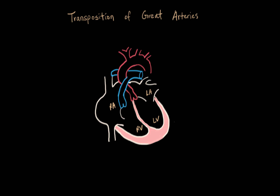So in transposition, these two vessels are plugged into the opposite place where they're supposed to be. The pulmonary artery, leading to the lungs, now plugs into the left ventricle. And the aorta is now plugged into the right side, receiving deoxygenated blood from the body.